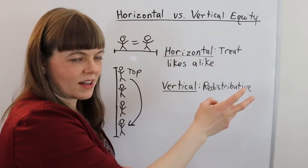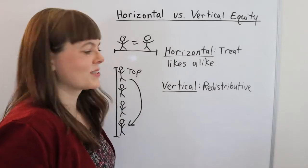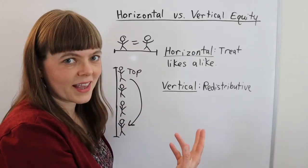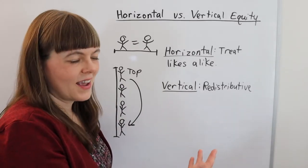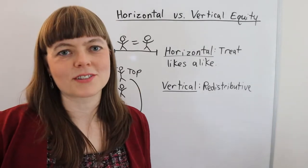The way horizontal equity was described was treating like people alike, but the way vertical equity was described was treating unlike people differently. And that's not what it means—that's a very misleading way of describing it.